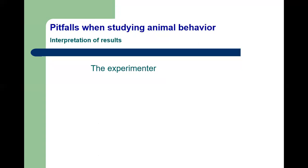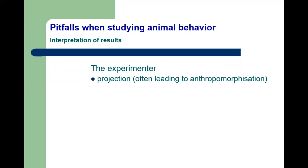When we study animal behavior there are different pitfalls, starting with the interpretation of results. Projection often leads to anthropomorphization — it's a basic human thing to assign motivations to others that resemble your own. If I went into science because I wanted to become filthy rich and then interpret everything others do the same way, that's projection. We end up assigning drives and emotions to animals that are human and perhaps completely foreign to the animal itself.